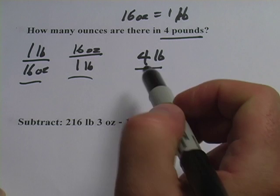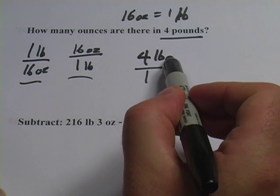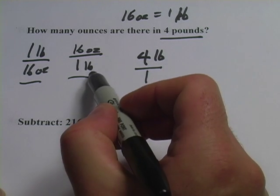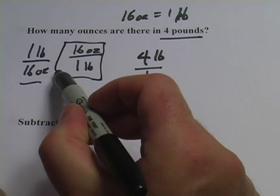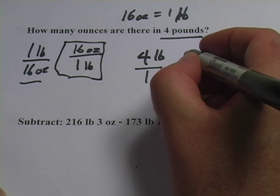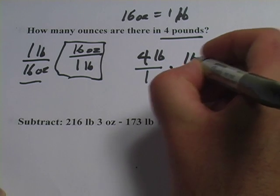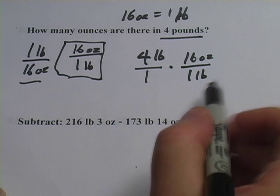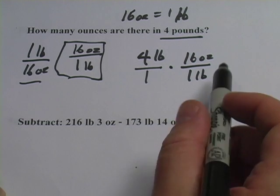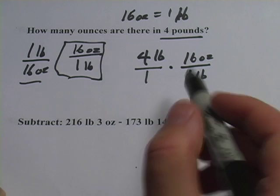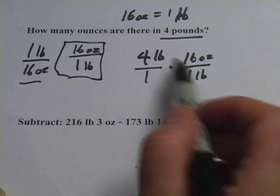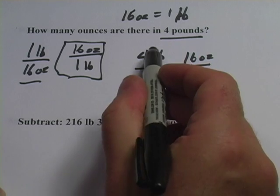Now which one of these do I pick to multiply to convert this into ounces? The trick is that if you have pounds on the top to begin with, you want pounds on the bottom in your unit multiplier. So I'm going to choose this one. So I'm going to multiply this by 16 ounces on the top and 1 pound on the bottom. The reason I want pounds on the bottom is because I want to end up with ounces. That's what the question says, how many ounces? When you have pounds on the top and pounds on the bottom, you cancel those.